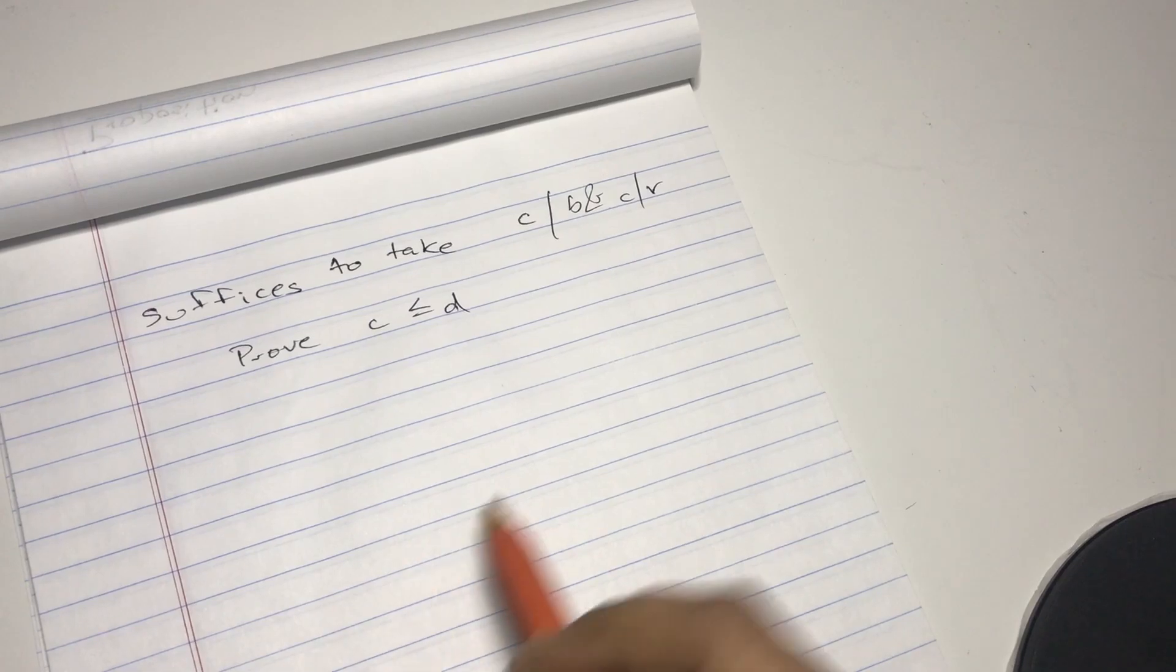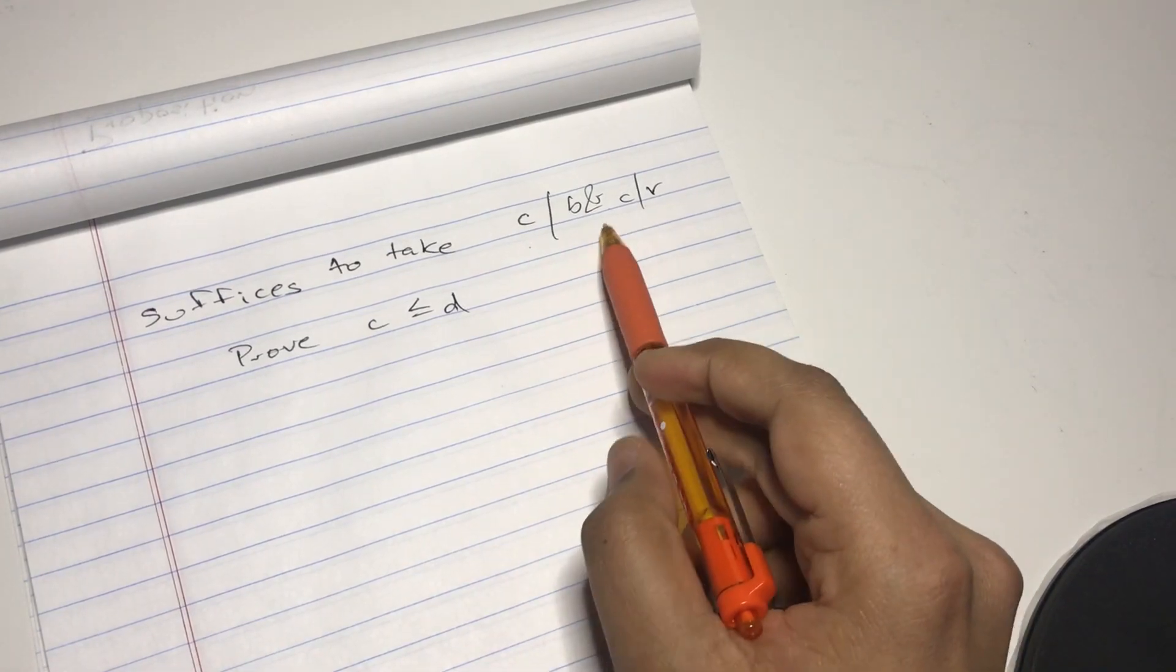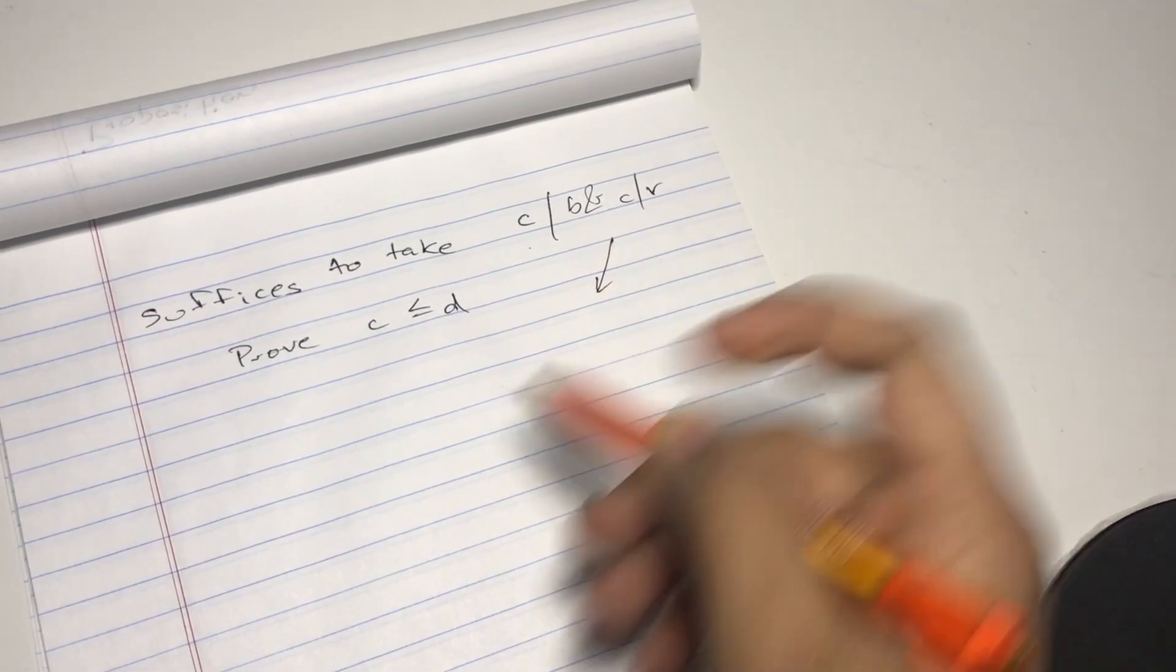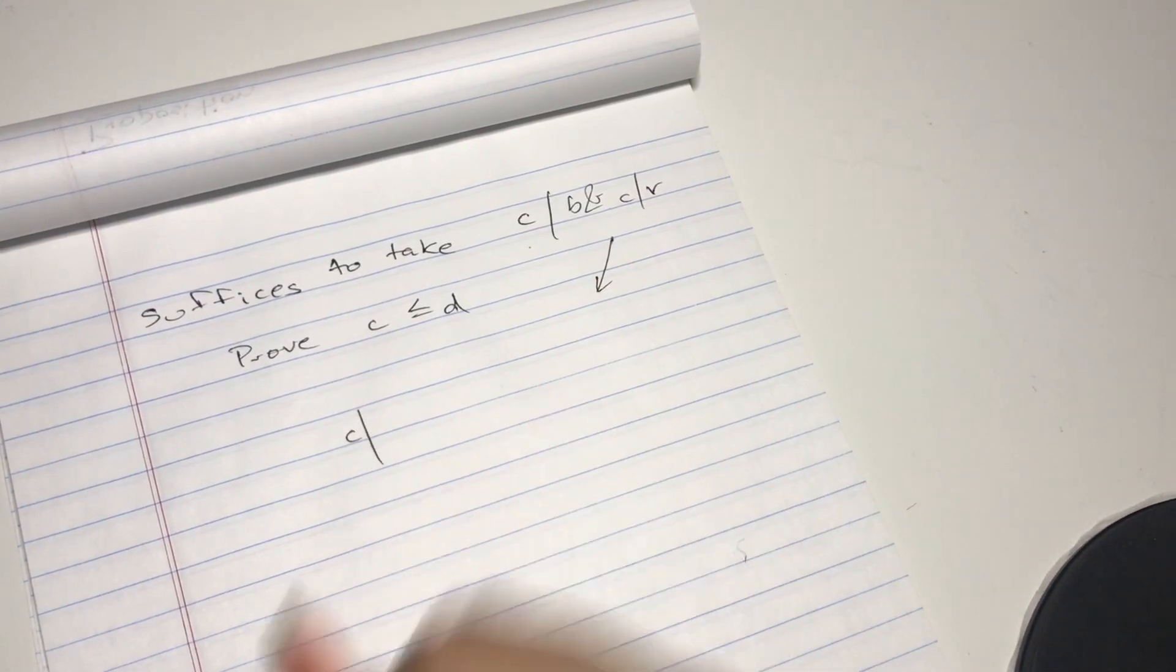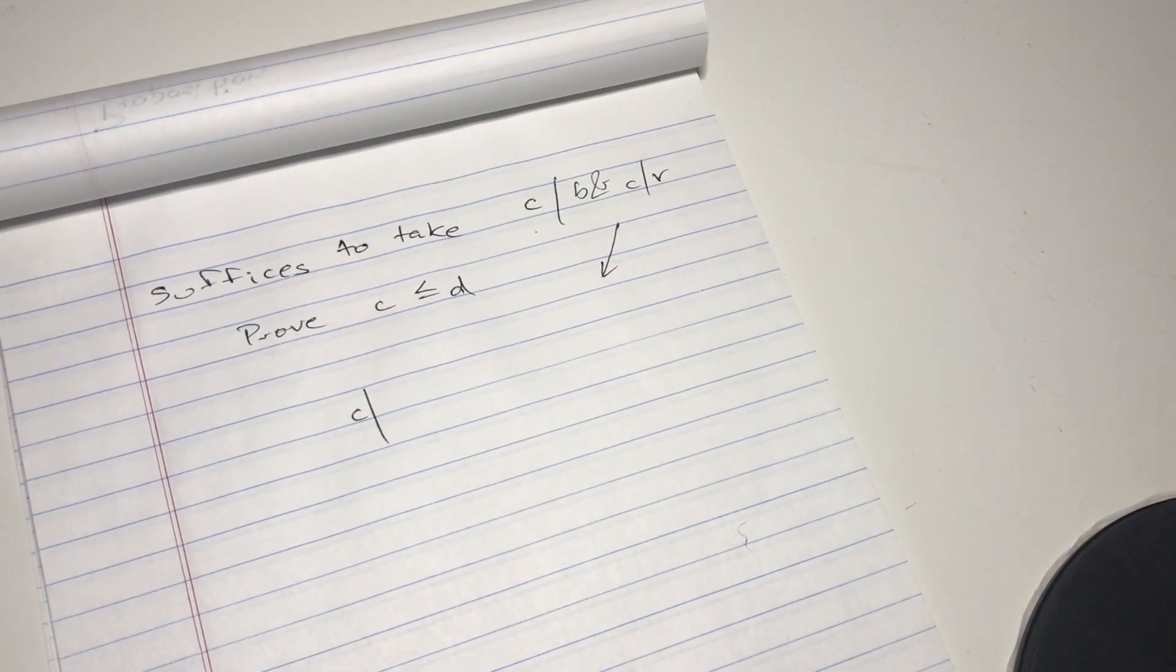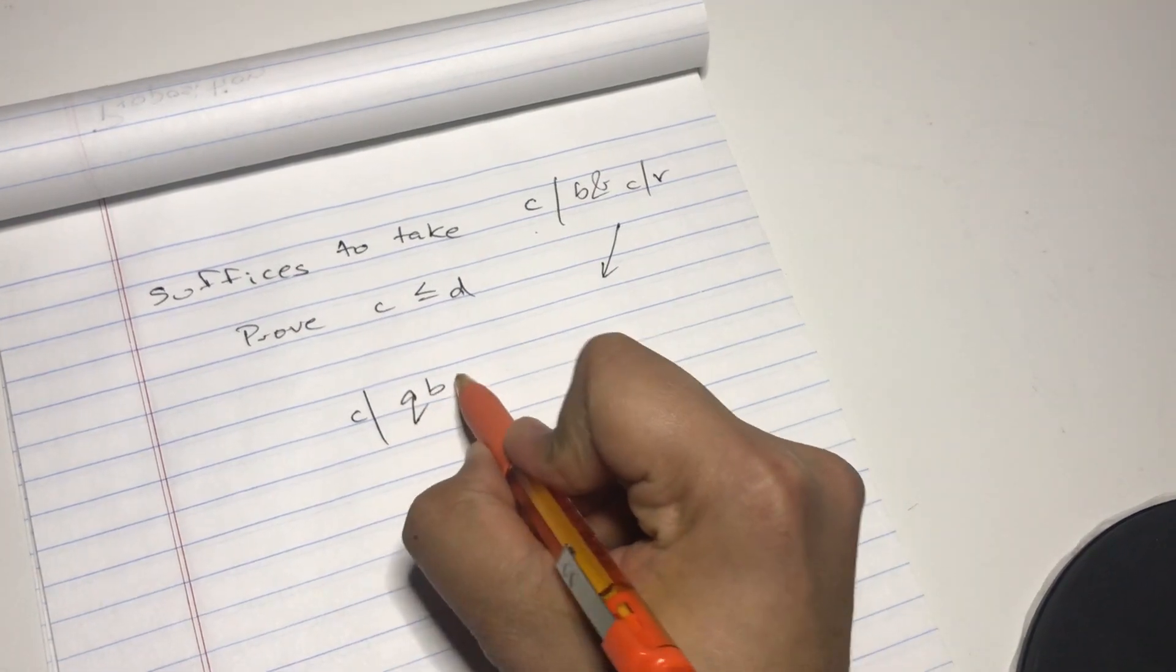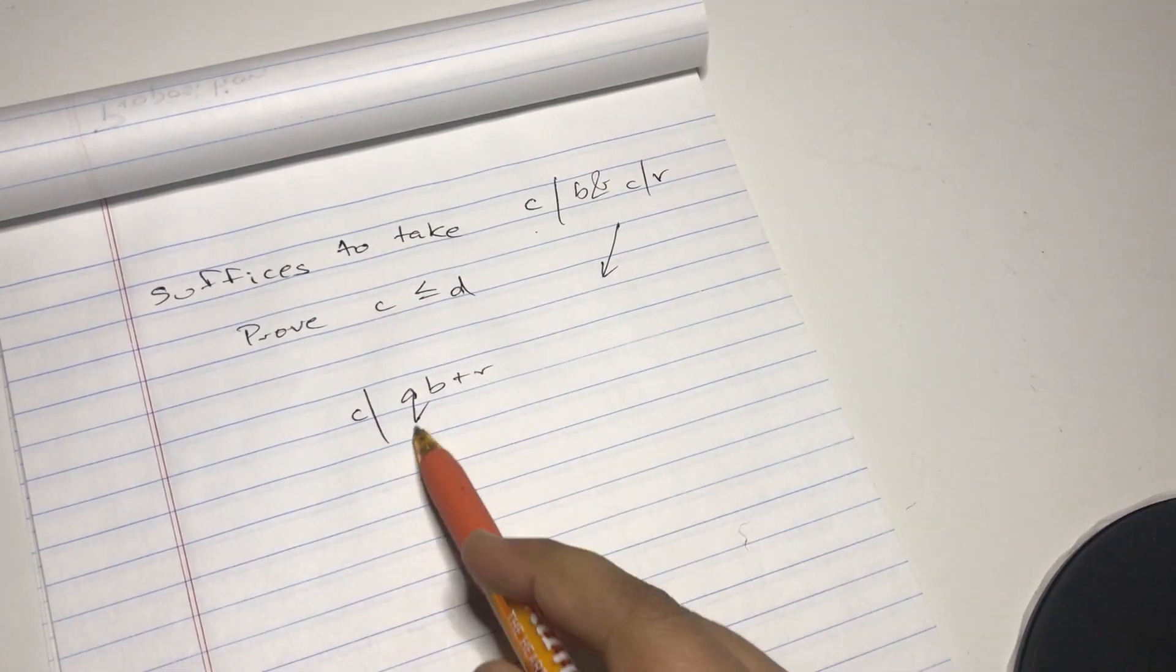Right, so we have c divides b and c divides r. So again, c divides any linear combination of b and r. So in this case, we'll take c divides qb plus r. In this case, x equals q, y equals one.